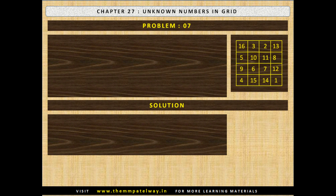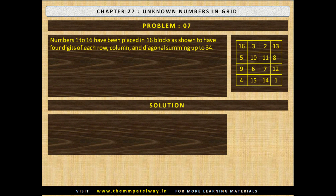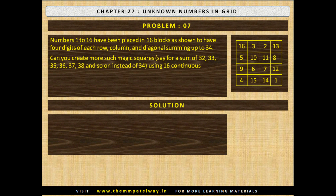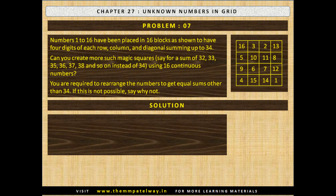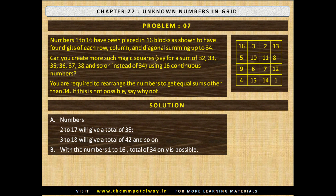Problem 7. Numbers 1 to 16 have been placed in 16 blocks as shown, to have 4 digits of each row, column and diagonal summing up to 34. Can you create more such magic squares for a sum of 32, 33, 35, 36, 37, 38 and so on, instead of 34, using 16 continuous numbers? You are required to arrange the numbers to get equal sums other than 34. If this is not possible, say why not. Now stop the video and solve the problem. The solution is shown: numbers 2 to 17 will give a total of 38; numbers 3 to 18 will give a total of 42, and so on. With numbers 1 to 16, a total of 34 only is possible.